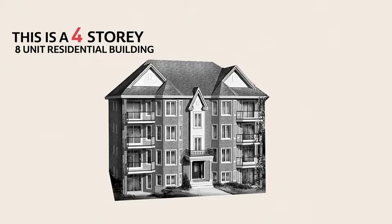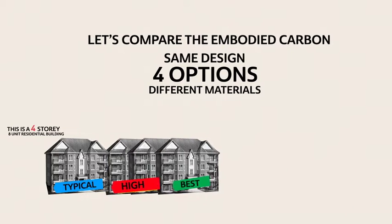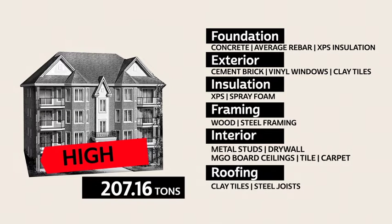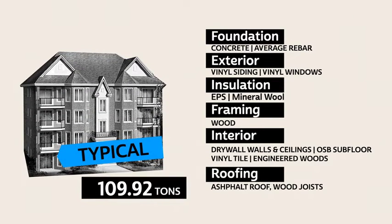As an example, let's look at a model of a 10,000 square foot, four-story, eight-unit residential building. If we choose common building materials that have a really high carbon footprint in their category, this building could be responsible for as much as 207 tons of greenhouse gas emissions before anybody's even moved in. We could also choose a less intensive set of materials and get that figure down to 110 tons of emissions — but through those simple material substitutions, we've almost cut the carbon footprint in half.